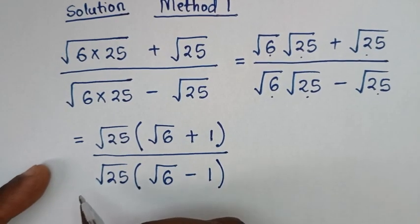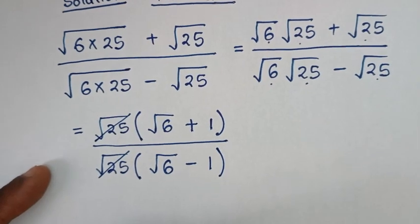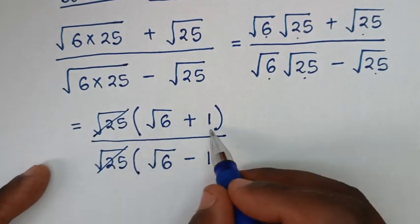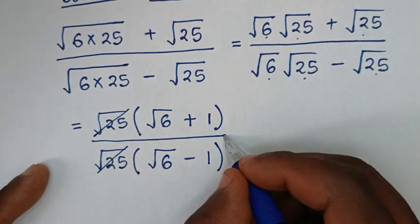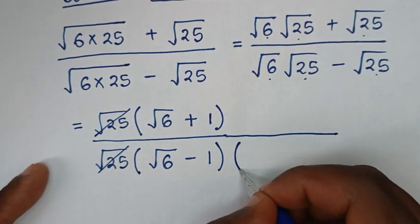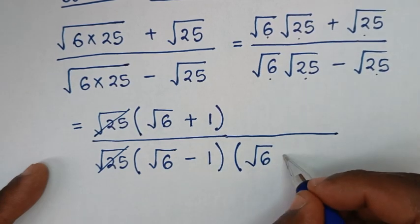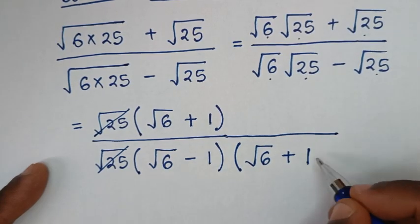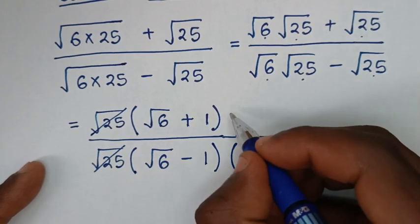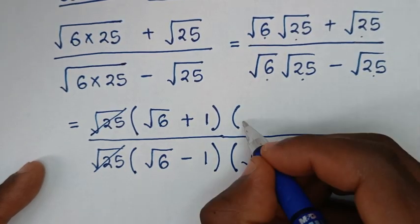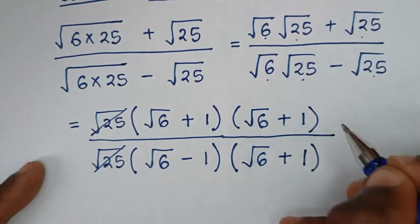Then to simplify, this square root of 25 cancels this square root of 25. Now, from this divided by this, we rationalize the denominator. So into the denominator, we multiply by square root of 6 — here we have minus, so it will be plus 1. So we multiply this in the denominator, and also in the numerator we multiply by square root of 6 plus 1, bracket.